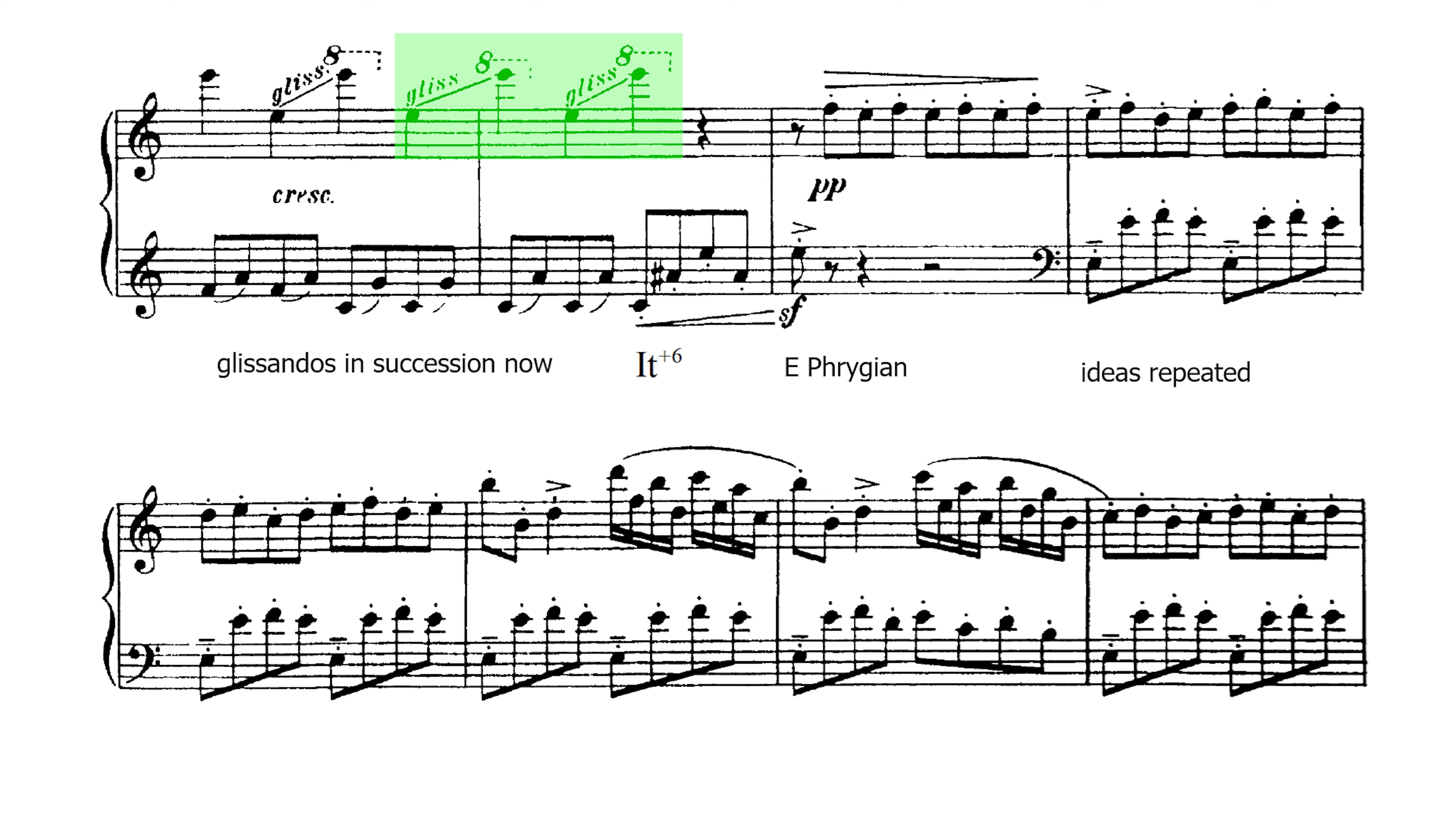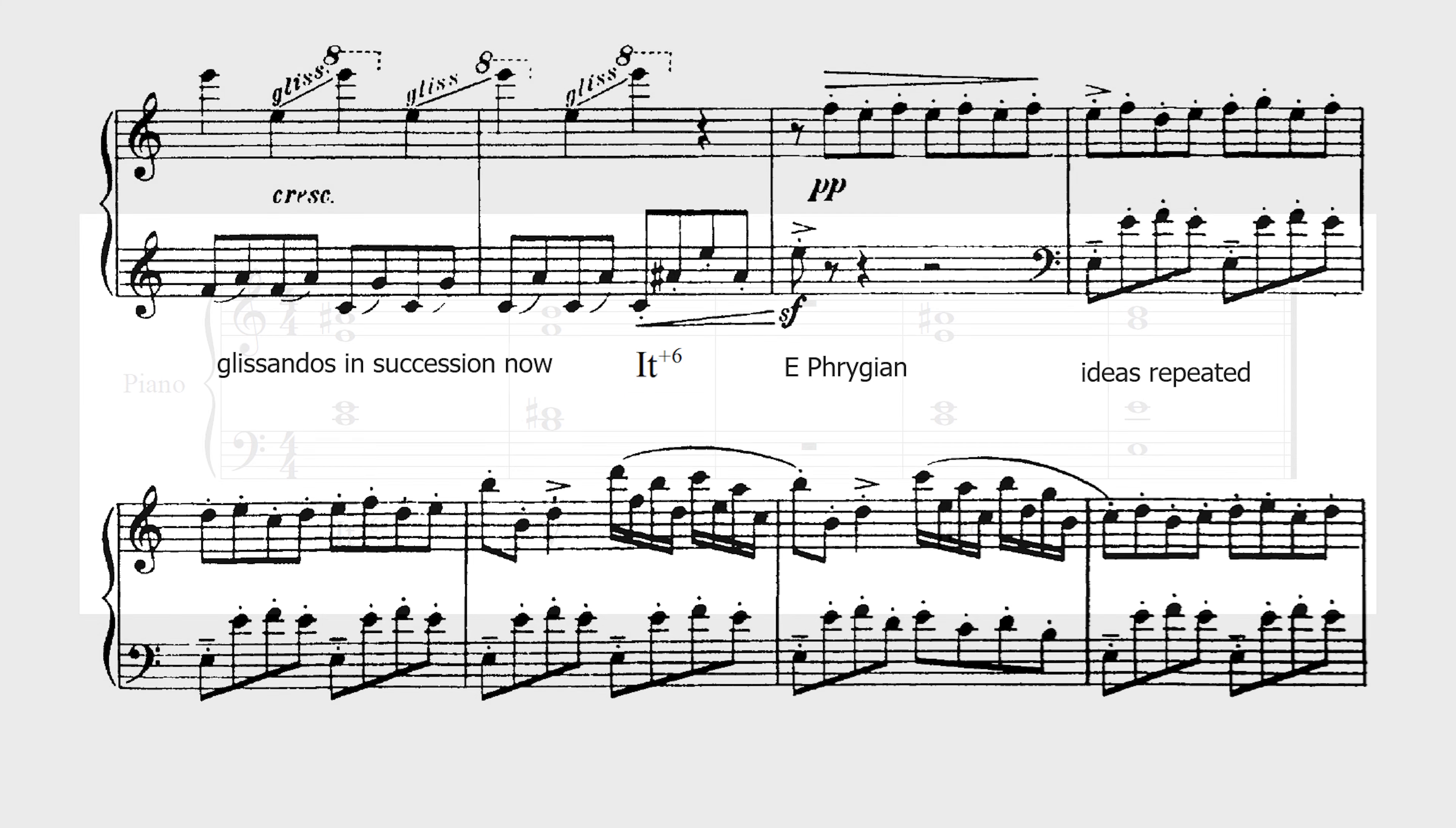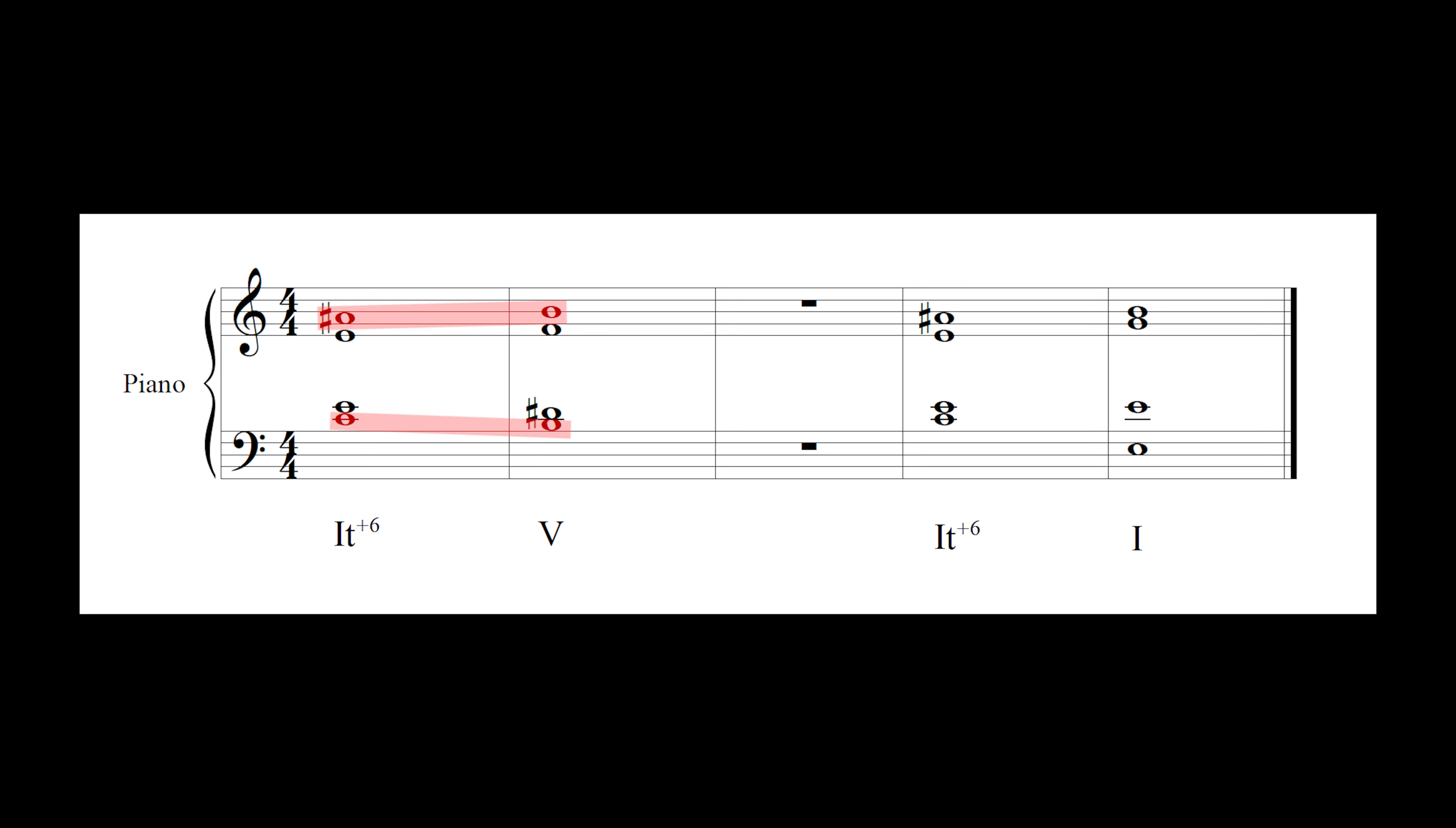The last chord here, which is indicated staccato, includes C, A sharp and E. The C and A sharp form an augmented sixth interval that could move to B in the outer voices. But this chord is never given and Prokofiev repeats the B1 section directly in E Phrygian.